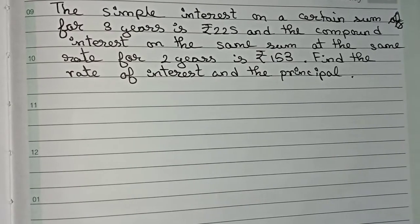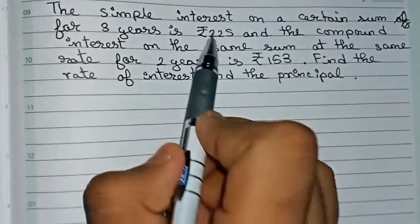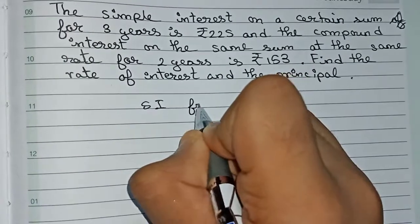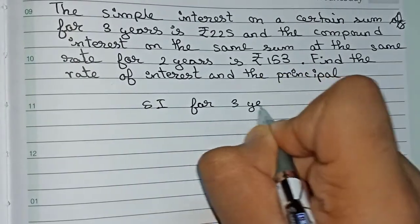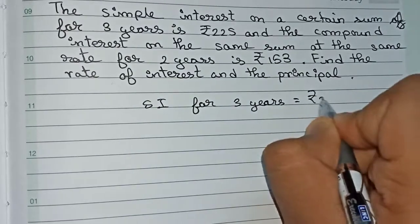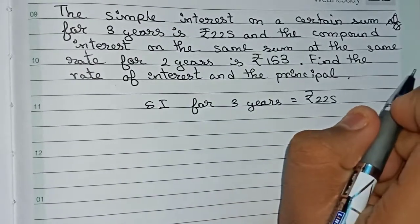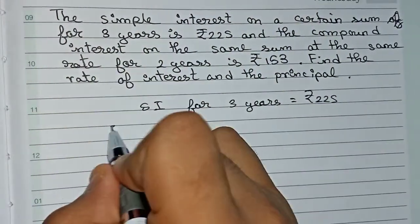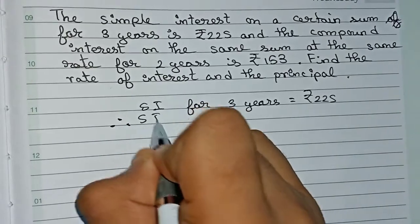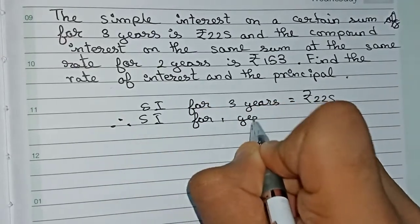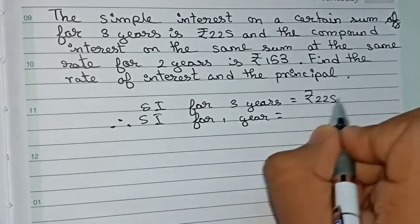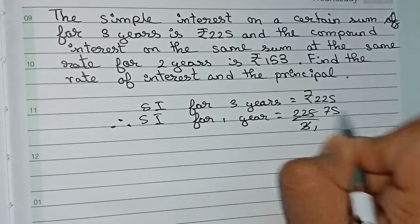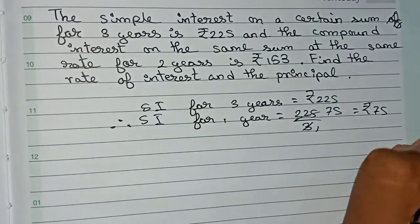For this question we are provided that the simple interest for 3 years is ₹225. So SI for 3 years = ₹225. We all know that SI doesn't change, it remains the same each year. Therefore, we can find the SI for 1 year. SI for 1 year = 225÷3 = ₹75.